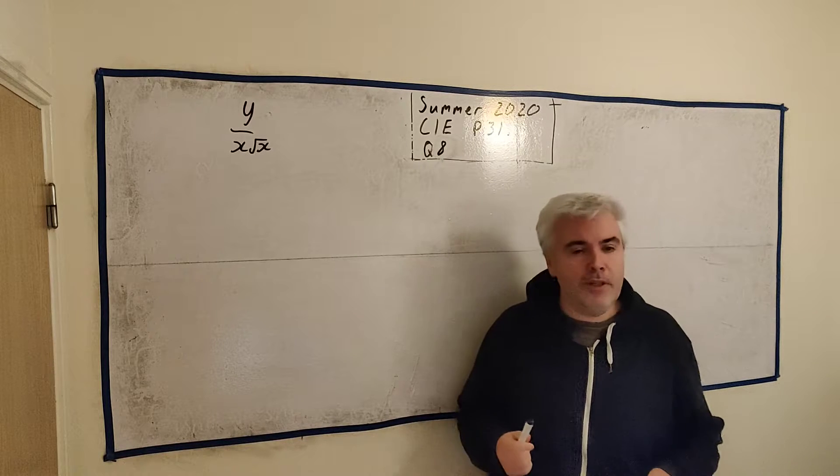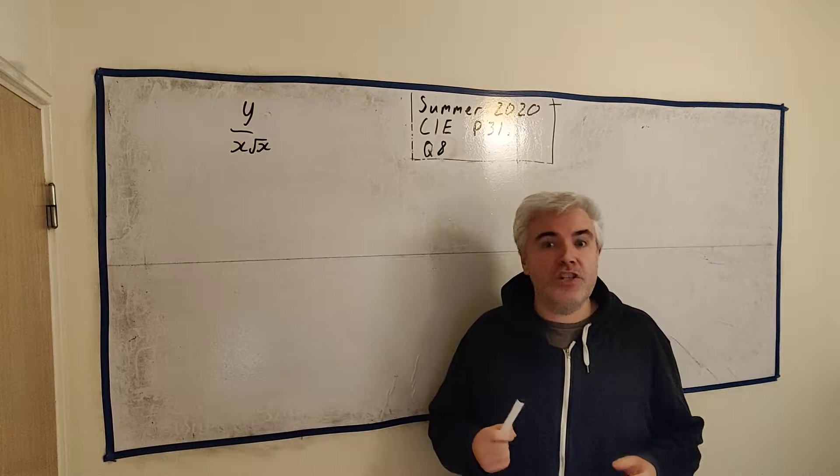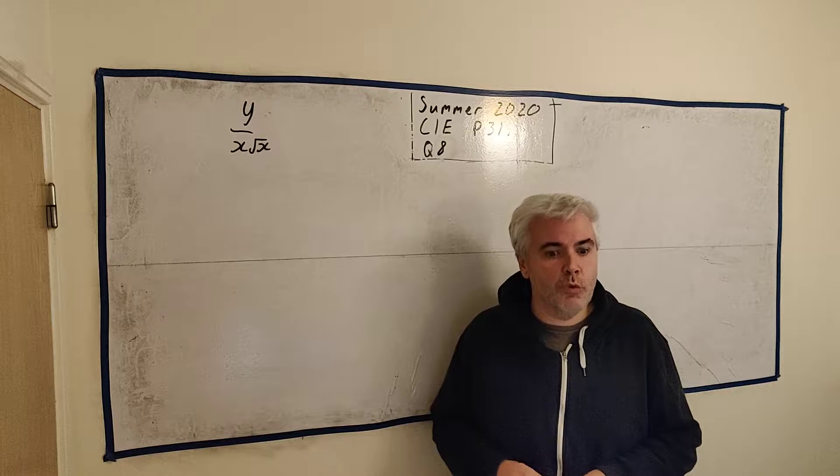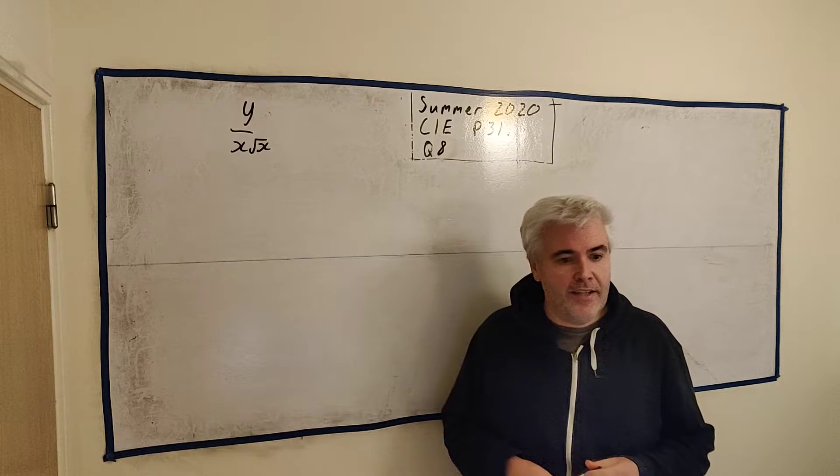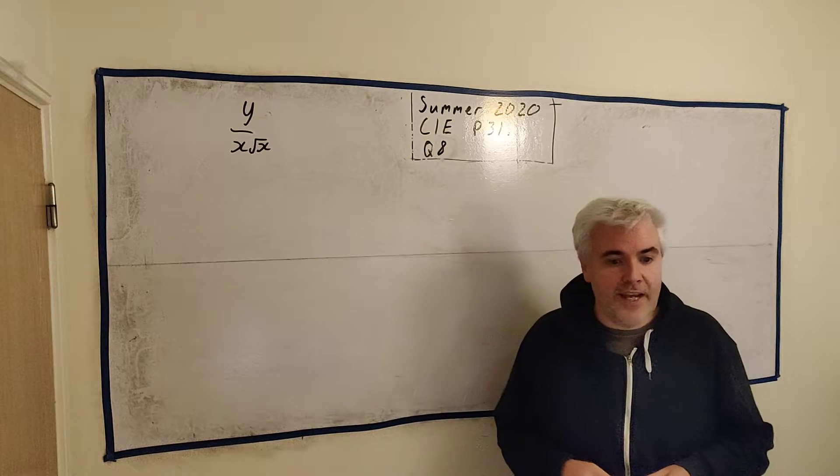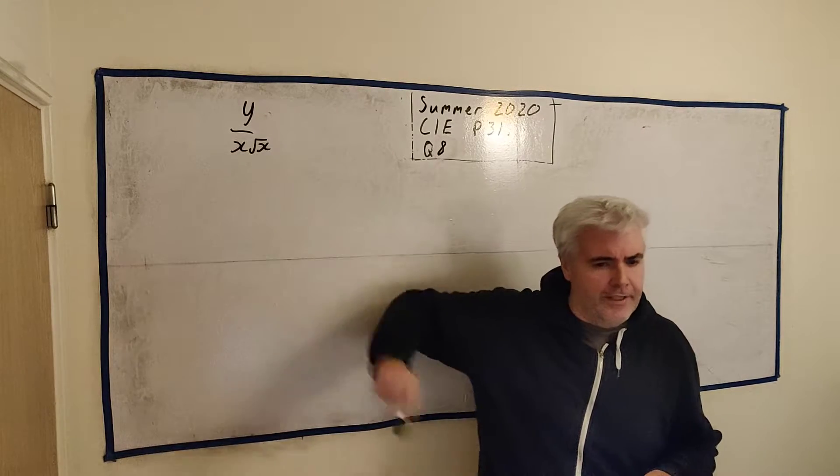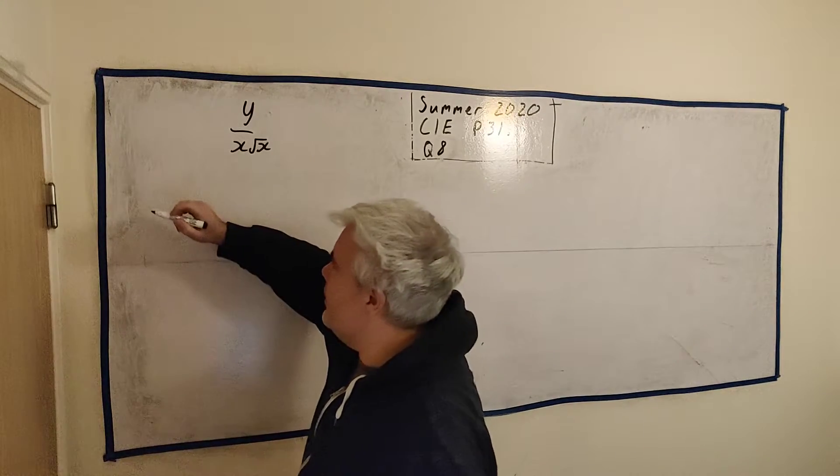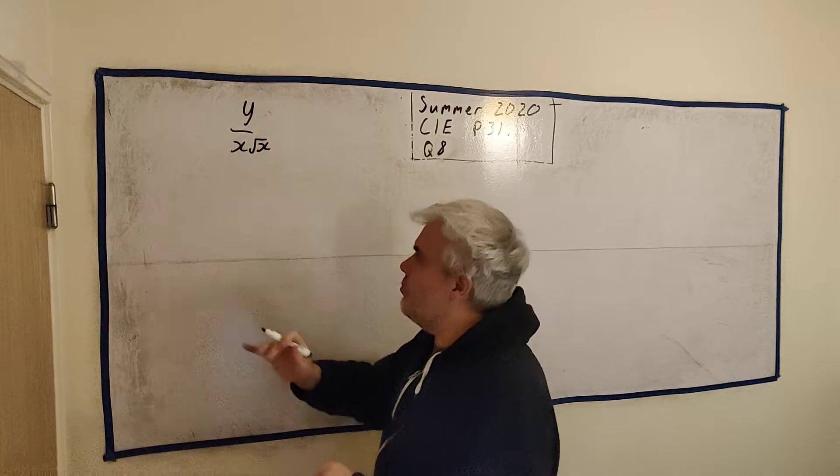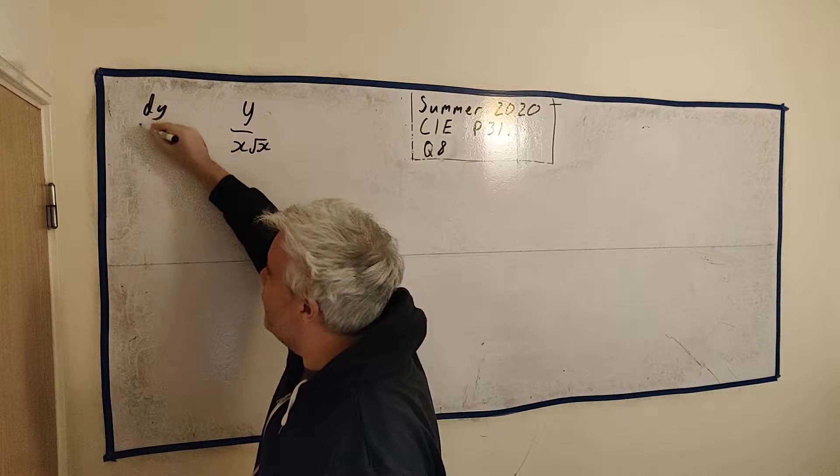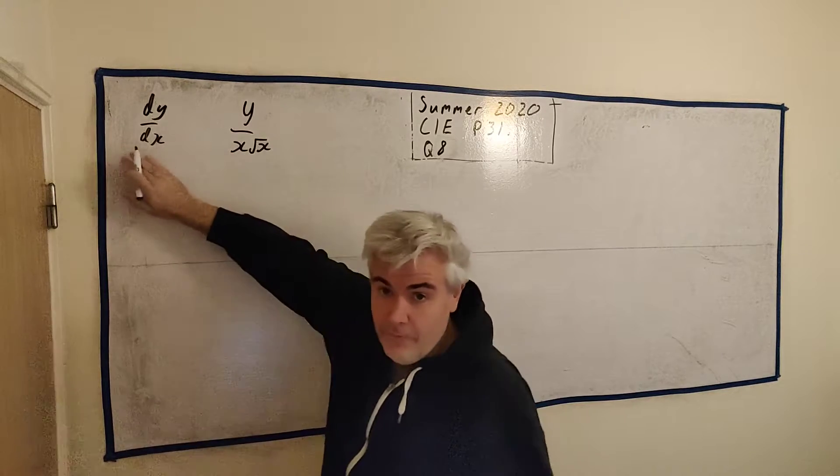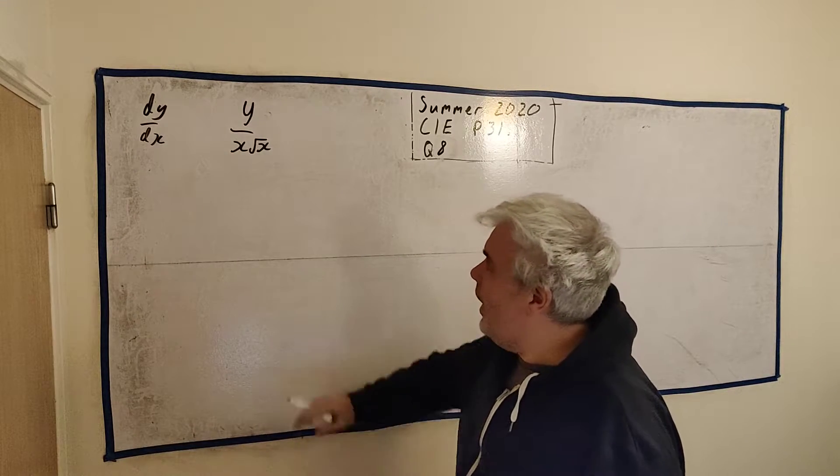The first problem is something that a GCSE student, a younger student, would actually be able to solve. They tell us that a certain curve such that its gradient at a point is proportional to this. Now all that means is, this is not the bit the GCSE student would be able to know, but you should know that a gradient is dy/dx. You'll get a mark for writing dy/dx.